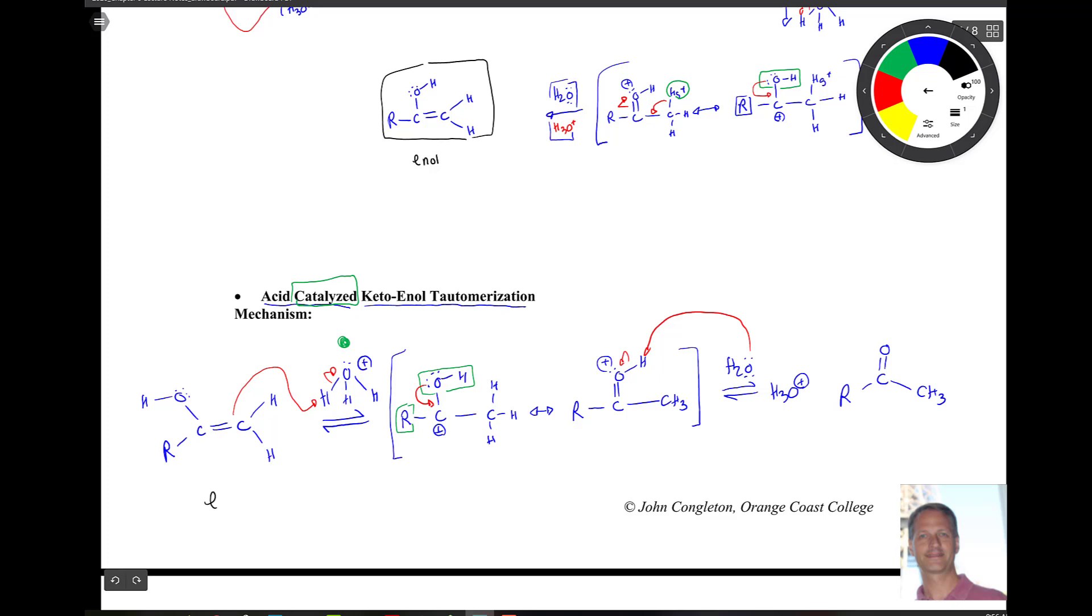So again, to point out, this is the enol form. And then this is over here, the keto form.